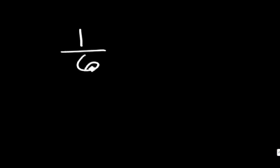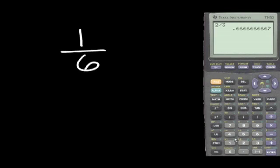There is only one outcome that's more than 5 out of the 6 possible outcomes. Approximated to the nearest thousandths, the answer is 0.167.